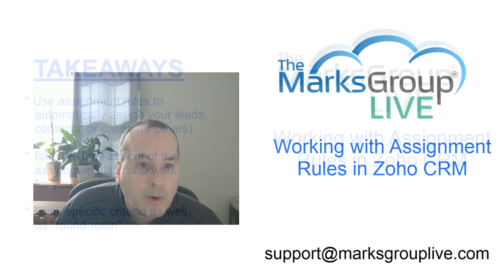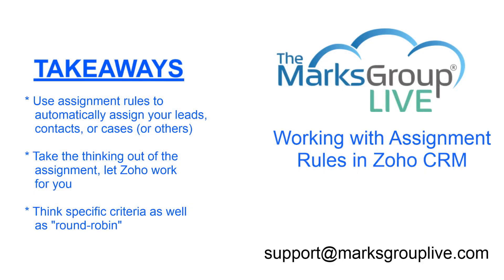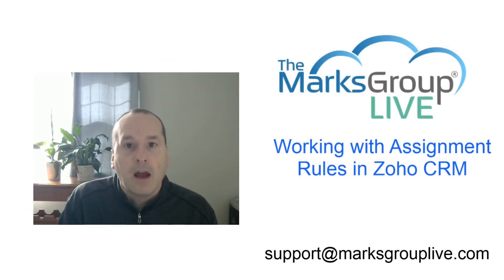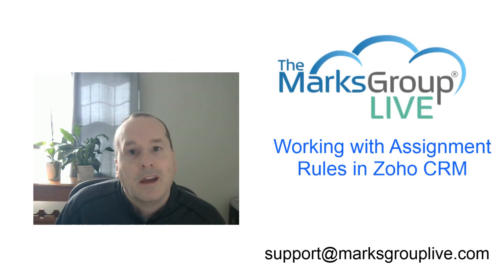Here are the main points of what we're talking about today. We're going to talk about using assignment rules to automatically assign your leads, contacts, cases, or other records. We're going to take the thinking out of that assignment — who gets what when you have a trade show list you're importing. Let Zoho do the work for you, based on specific criteria like state, territory, region, product interest, or maybe just a round robin. We're going to jump into Zoho CRM and cover those items.